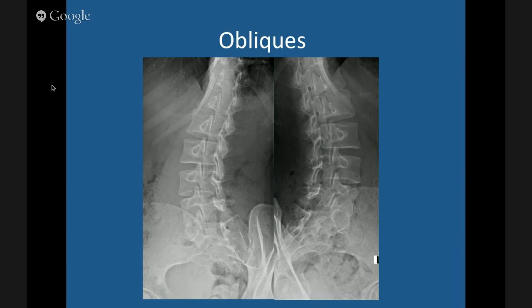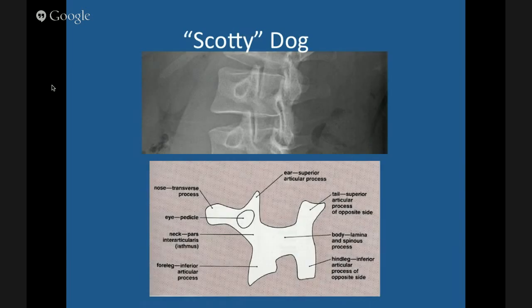Has anyone talked about the Scotty Dog? On oblique lumbar films you see the Scotty Dog. The eye is the pedicle, the ear is the superior articular facet, the nose is the transverse process, the neck or collar is where the pars interarticularis is, the front leg is the inferior articular facet, and the body is the lamina. The tail is the superior articular facet of the opposite side. Most of the pathology occurs right in the neck of the Scotty Dog — that's where you get pars defects.